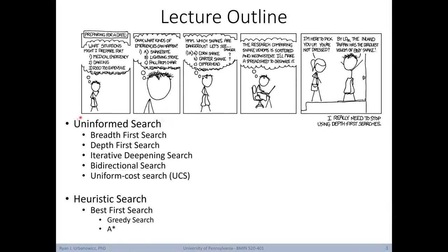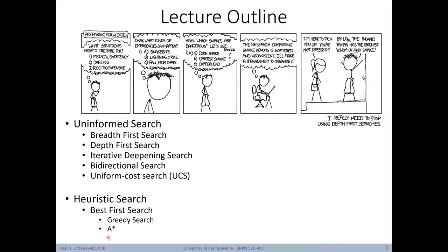We'll begin by examining a variety of uninformed search methods, including breadth-first search, depth-first search, iterative deepening search, bidirectional search, and uniform cost search. Then we'll move on to heuristic search methods, giving particular focus to two kinds of best-first search methods: starting with greedy search, and then moving on to the A-star algorithm.